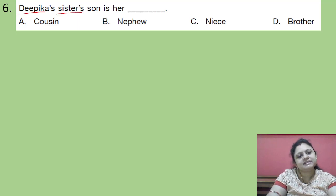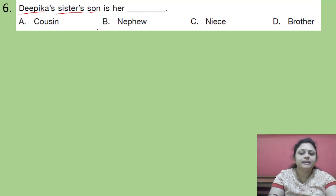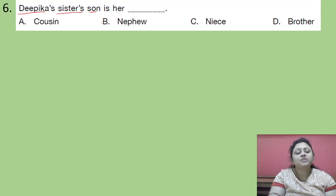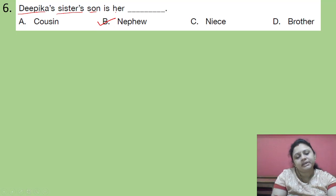Coming to the next question. Deepika's sister's son is her. Options are A. Cousin. B. Nephew.